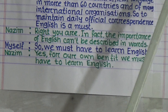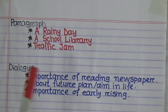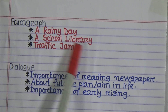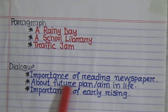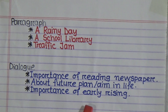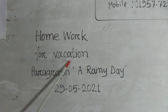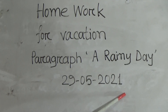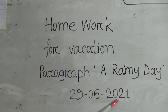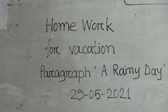Students, I have given some more paragraphs and dialogues. Paragraphs are: a rainy day, school library, and traffic jam. Dialogues are: importance of reading newspaper, about future plan or aim in life, and importance of early rising. You have to memorize all of these at home. Your homework for vacation will be a paragraph on 'A Rainy Day,' and the submission date is 29th May 2021.